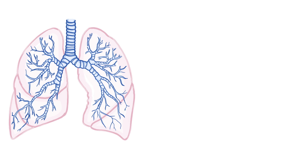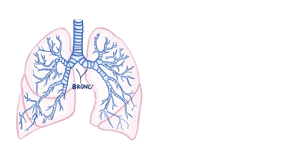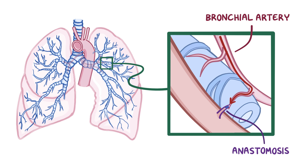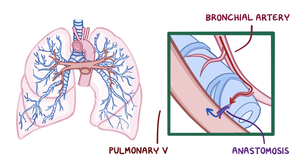Second, the conducting airways of the lungs, like the bronchi, receive systemic arterial blood from the bronchial arteries. But the deoxygenated blood can flow, or anastomose, right into nearby pulmonary veins which are carrying oxygenated blood that has already traveled through the pulmonary capillaries. So once again, deoxygenated blood might flow right into the pulmonary veins and mix in with the rest of the oxygenated blood, bypassing the pulmonary circulation.